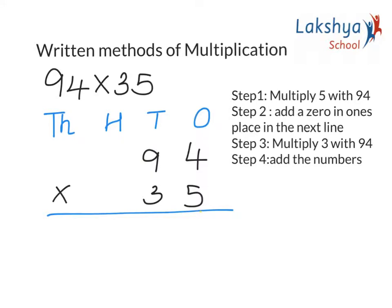5 × 4 gives me 20. So I need to write a zero over here and carry over my 2. 5 × 9 gives me 45, plus 2 gives me 47. Step 2: Add a zero in ones place in the next line.